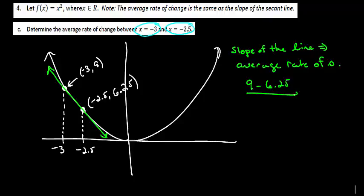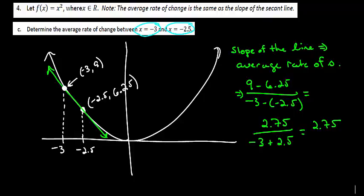So when we calculate the slope, we've got 9 minus 6.25 over negative 3 minus negative 2.5. So for our numerator, if we do that computation out, we end up with 2.75, and our denominator is going to be negative 0.5. And so that will give us a value of negative 5.5.